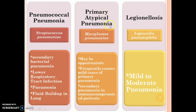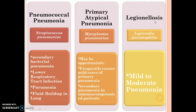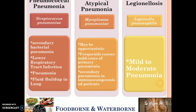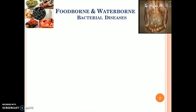Primary atypical pneumonia is caused by Mycoplasma pneumoniae and may be opportunistic. It frequently causes mild cases of primary pneumonia and secondary pneumonia in immunocompromised patients. Legionellosis is caused by Legionella pneumophila; the symptom is mild to moderate pneumonia. This concludes the airborne diseases.